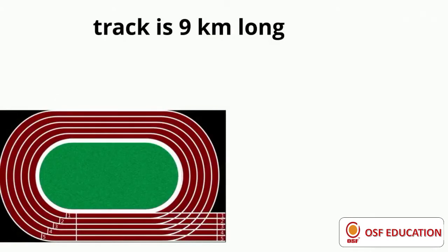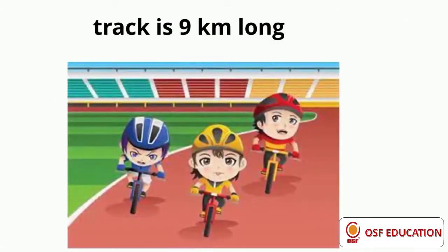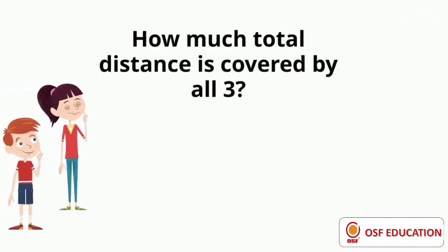Hey guys, so in a cycling competition, the track is 9 km long and 3 persons are going to participate. As they cover 9 km each, how much total distance do they cover?